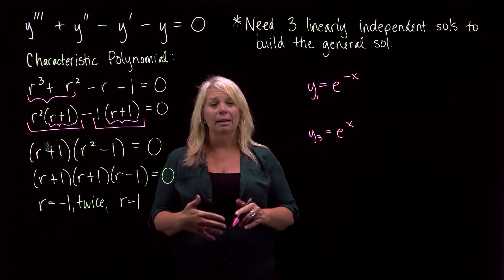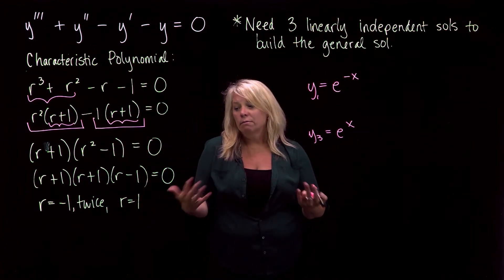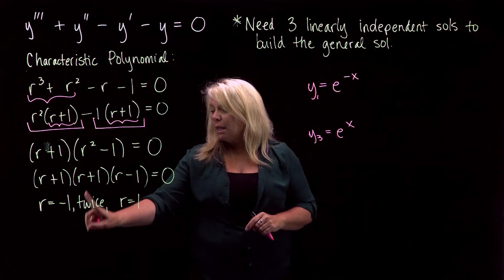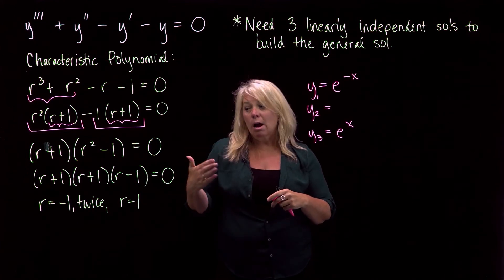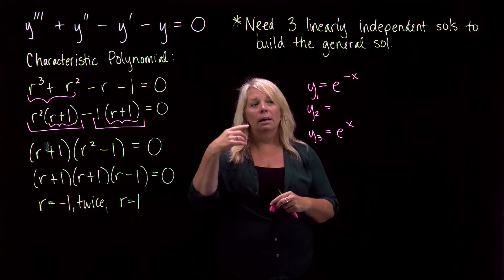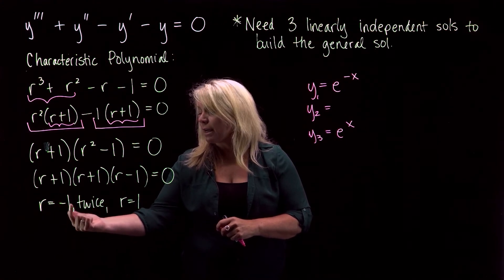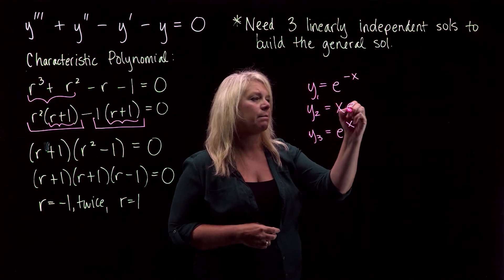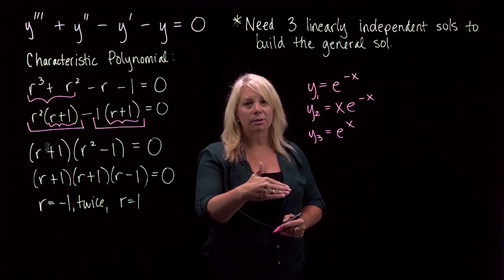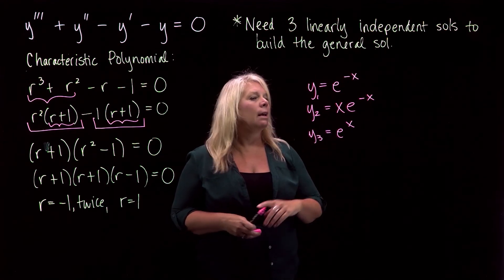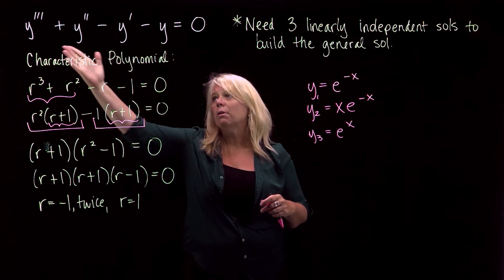When you have a repeated zero, you get the additional linearly independent solutions by multiplying by appropriate powers of x corresponding to the multiplicity of the zero. From r = −1 (multiplicity 2), the first solution is y₁ = e^(−x) and the second is y₂ = x·e^(−x). If the multiplicity were higher, you'd keep multiplying by x. You can verify these solutions work by taking the appropriate derivatives and plugging them into the differential equation to confirm you get zero.